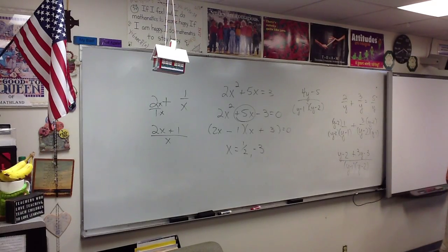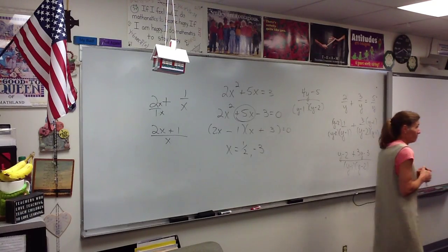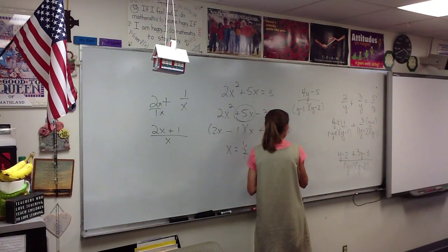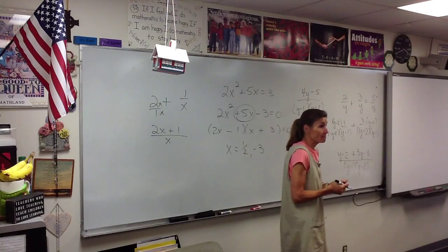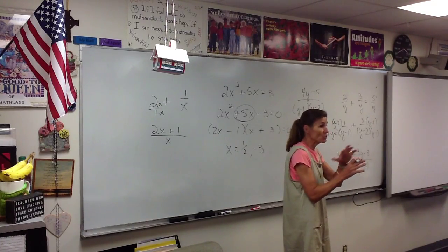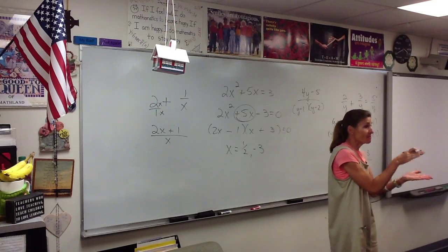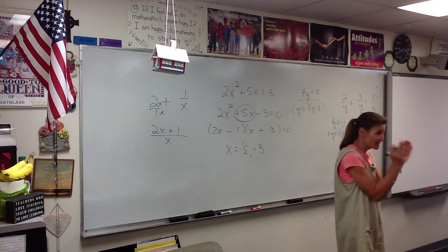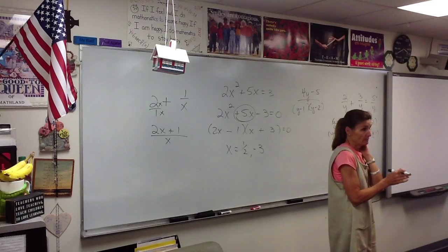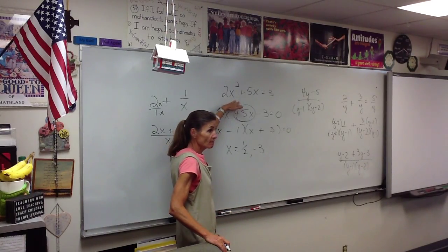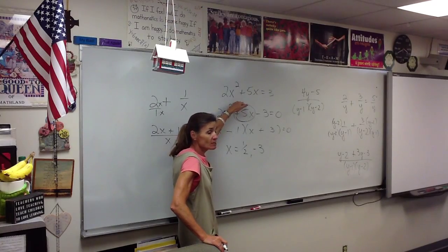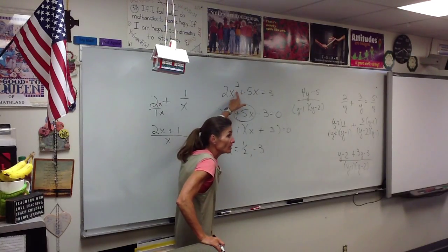Number 9 — determine whether the equation is linear in x. What does that even mean? What does it mean to be a linear equation? If a variable is linear, what is its power? This one is quadratic because its variable is squared. This equation has a square root, so x to the one half — that is not a linear variable.